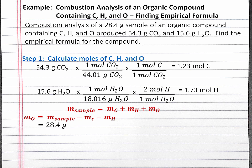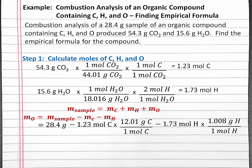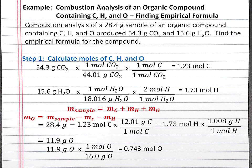We're given the mass of the sample in the problem is 28.4 grams. We calculated that we have 1.23 moles of carbon, and we can convert this into grams of carbon using its molar mass. We also calculated 1.73 moles of hydrogen, which we convert into grams of hydrogen using its molar mass. Performing this calculation, we get 11.9 grams of oxygen. We then convert 11.9 grams of oxygen into moles of oxygen using oxygen's molar mass, and we'll get 0.743 moles of oxygen.